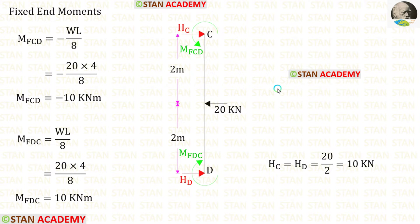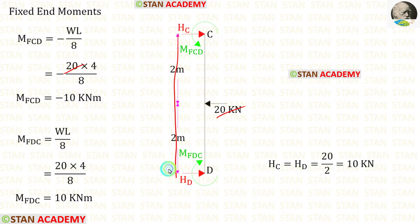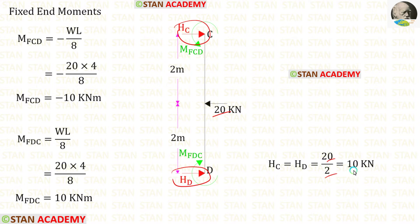Now let us find the fixed end moments and reactions in column CD. In column CD, we have a point load of 20 kilo Newton acting at the center. The formulas to find the fixed end moments are −WL/8 and +WL/8, where W is 20 and L is 4. After calculation, we get M of CD and M of DC. For horizontal reactions HC and HD, we divide 20 by 2, giving 10.